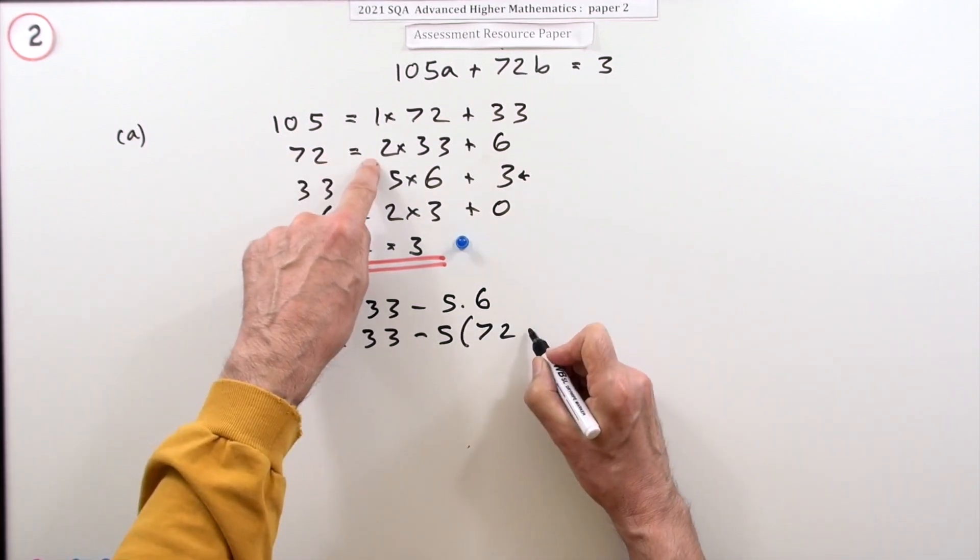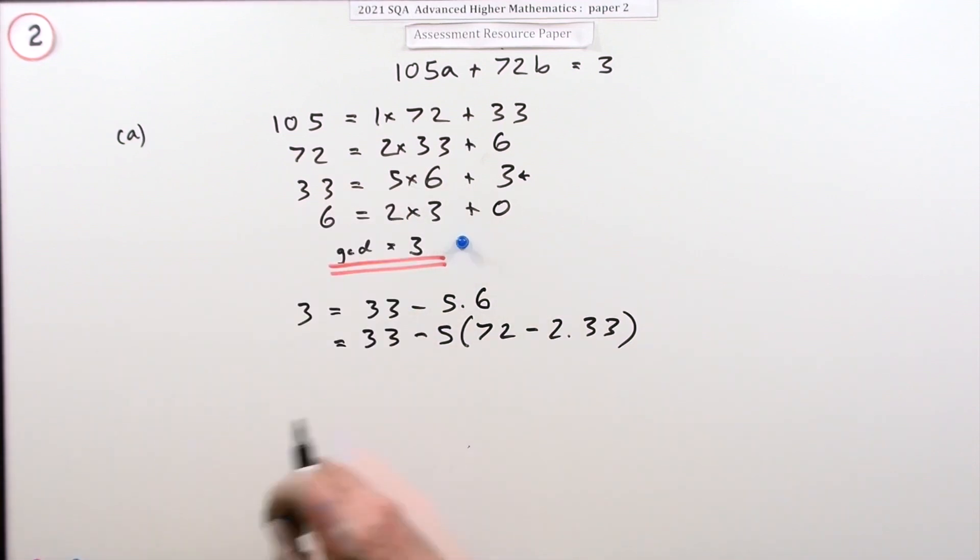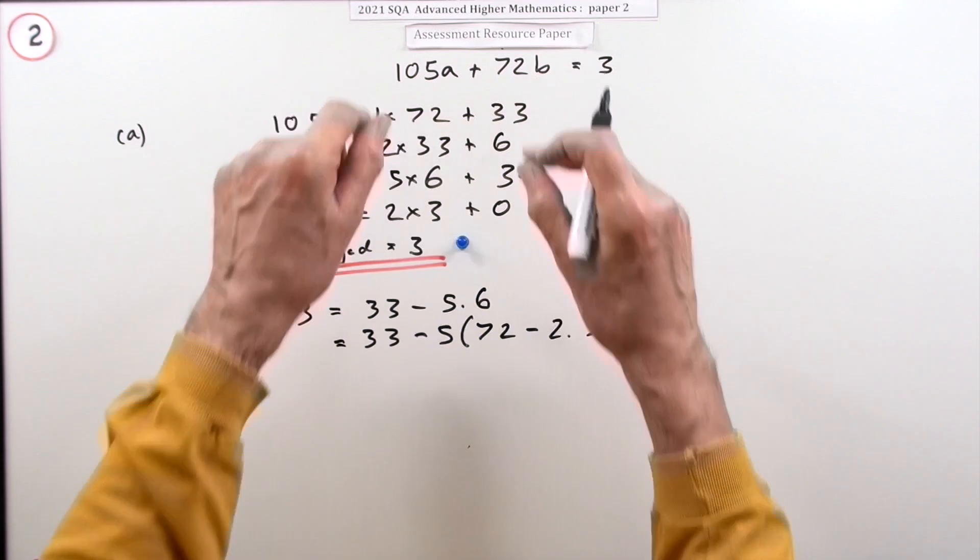Minus two lots of 33. At that point, I've given you the second mark for starting that reverse process to find how many of each you'll need.